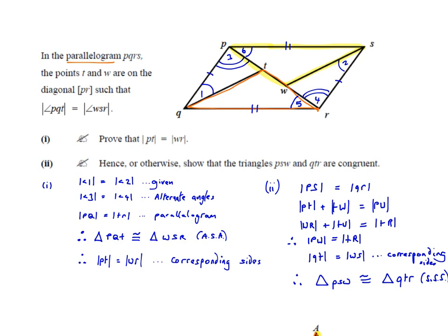I would go for angle-side-angle. We already know this side is equal to this side, that angle 1 is equal to angle 2 — given in the question — and that angles 3 and 4 are equal because they're alternate angles. This side is parallel to the other side because it's a parallelogram, so the diagonal is a transversal across two parallel sides, making the alternate angles always equal. So we have everything we need to prove the two triangles are congruent.